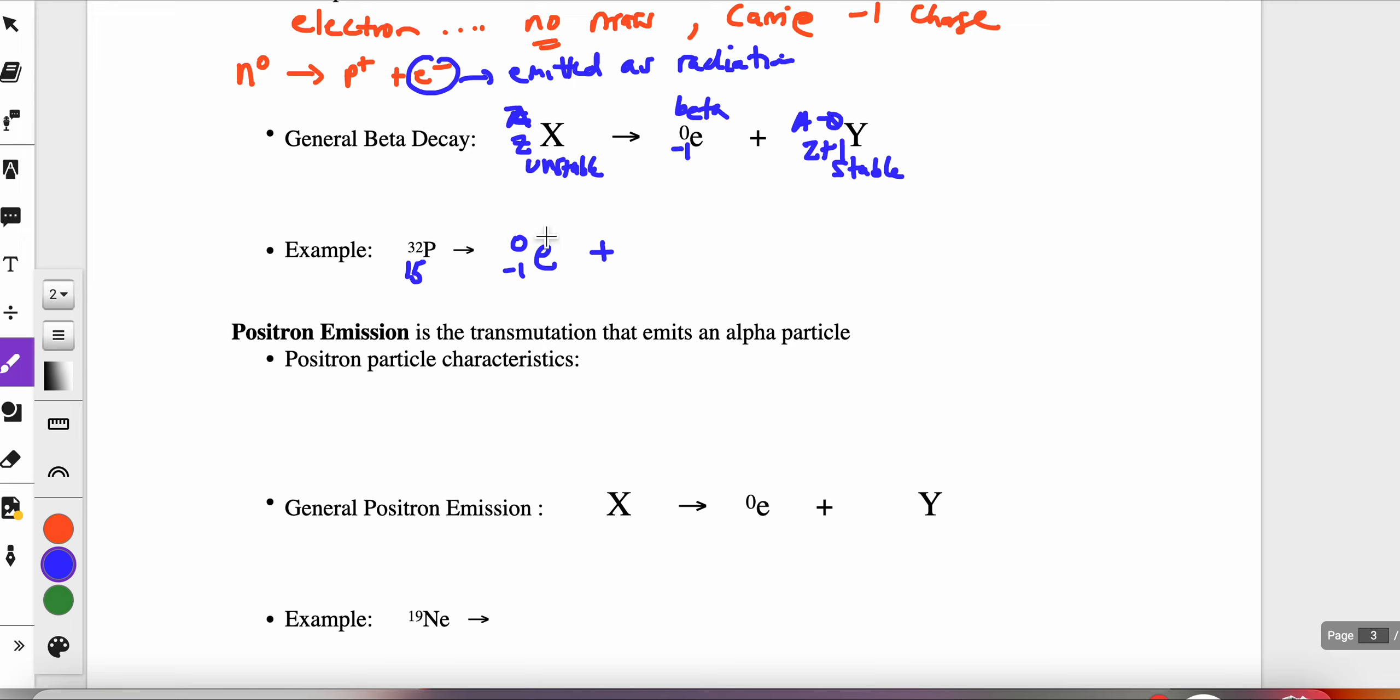The beta particle takes no mass with it, so the new more stable structure has a mass of 32. I know that my total number of protons needs to be 15 because that's how many we start with on the phosphorus side. So I need something plus negative 1 equals 15, which would have to be 16. When I look on the periodic table, phosphorus only has 15 protons - what structure has 16? That's sulfur. So this is the newly formed, more stable nucleus.